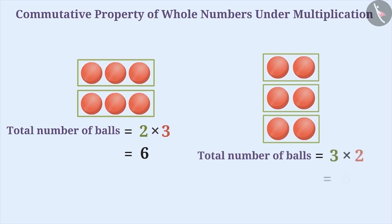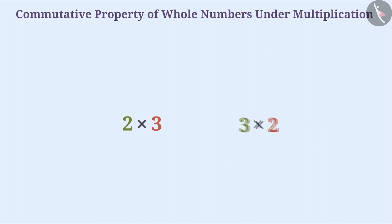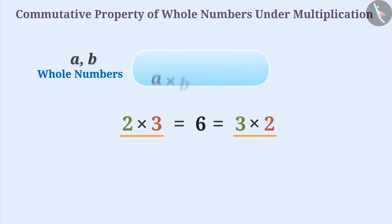Yes, three times two is also six. This shows that multiplying two whole numbers in any order will result in the same product. Therefore, for any two whole numbers a and b, the product of a and b equals the product of b and a. Thus, we can say that the multiplication of whole numbers is commutative.